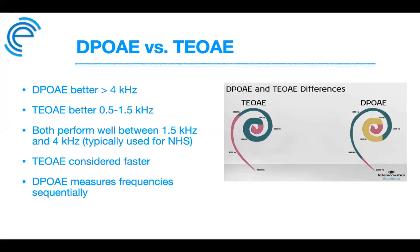There are differences between DPOAEs and TEOAEs. TEOAEs have decreased test time and allow quick detection of responses, and have been used more for screening because they measure a wide frequency range nearly simultaneously following the majority of the basilar membrane — whereas DPOAEs measure frequencies sequentially. Studies like Martin 2005 show TEOAEs are more robust by about 10 dB for newborns and older infants, and can be measured up to about 6 kHz.